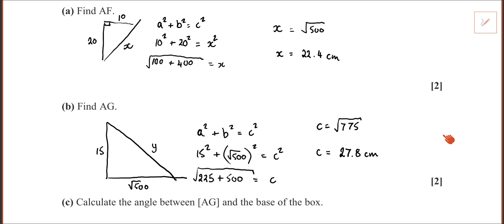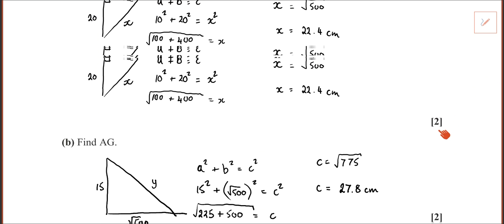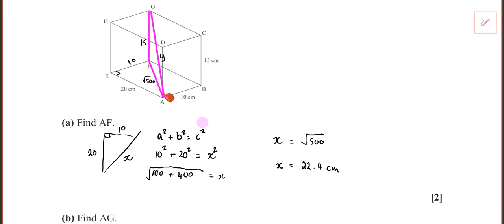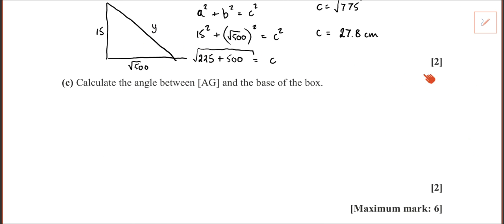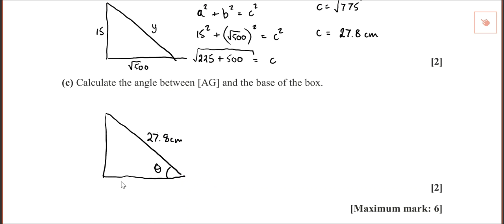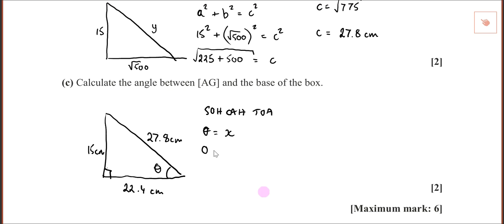Now the tough question: calculate the angle between AG and the base of the box. AG is the line we just worked out; the base line is also what we worked out. We're back to the same triangle. Using SOHCAHTOA, theta is x, the opposite is 15, the adjacent is 22.4, and the hypotenuse is 27.8. You can use any of them, but I suggest using the one with the number they've given you — I'll use sine or tan.